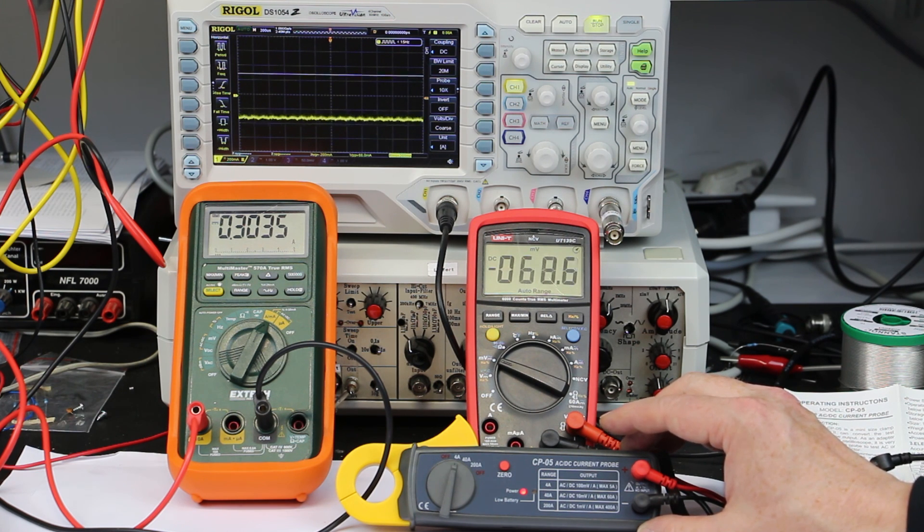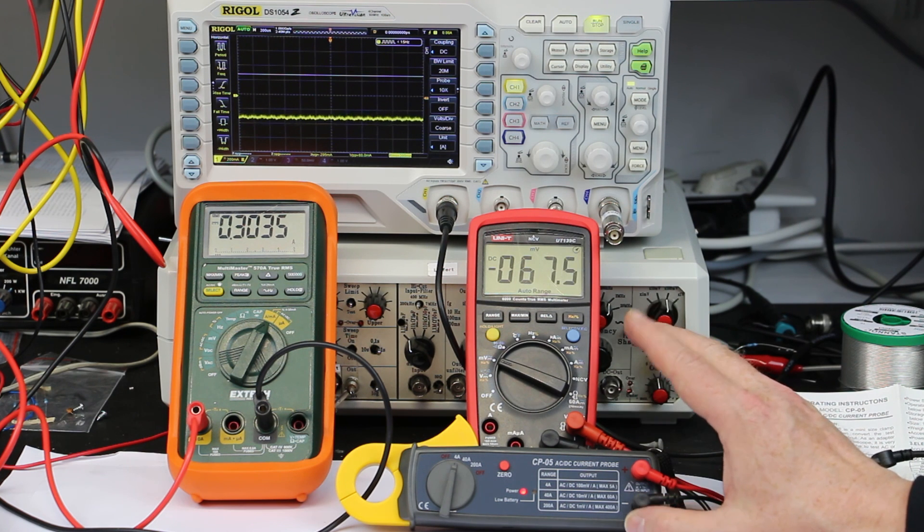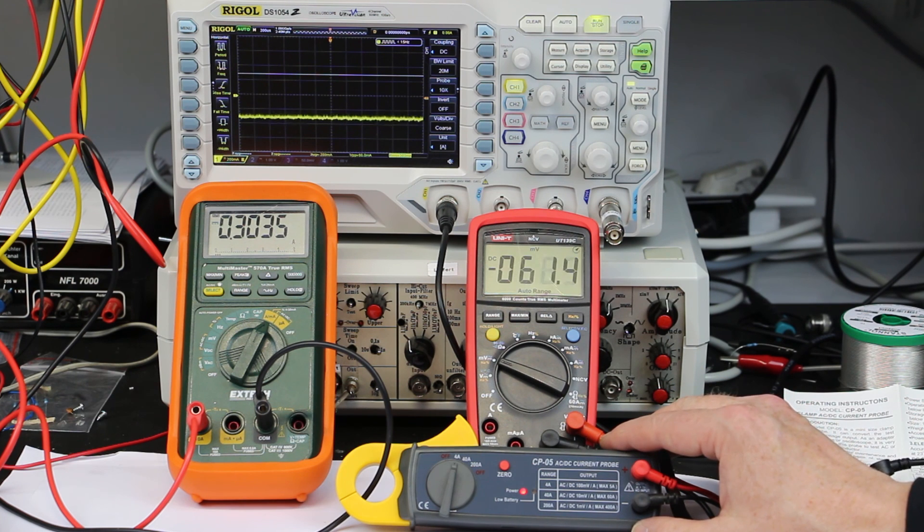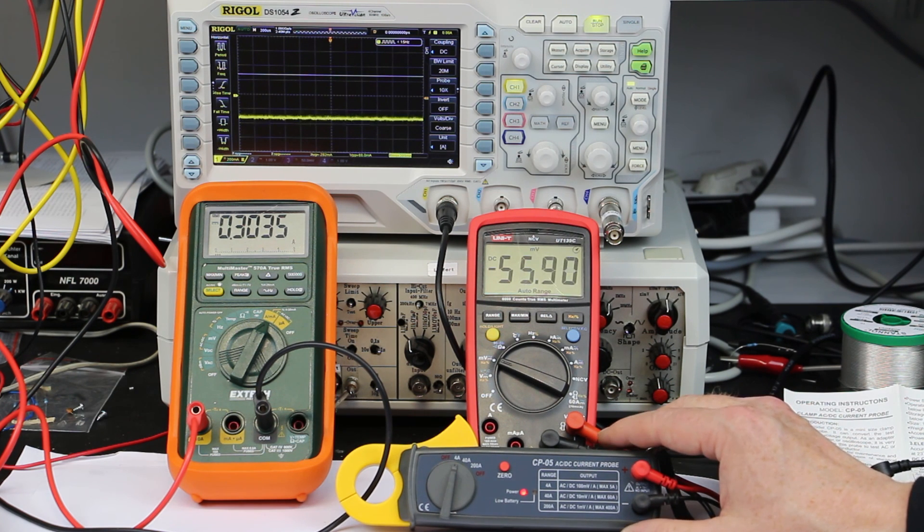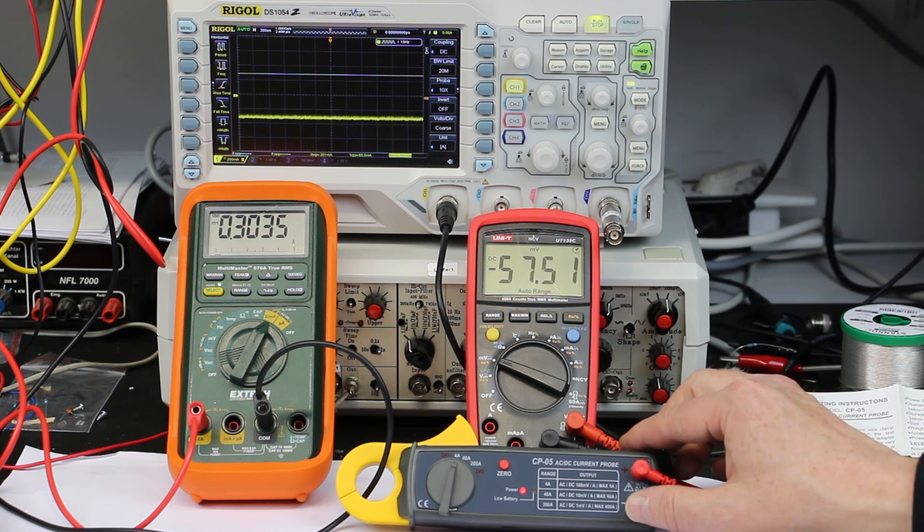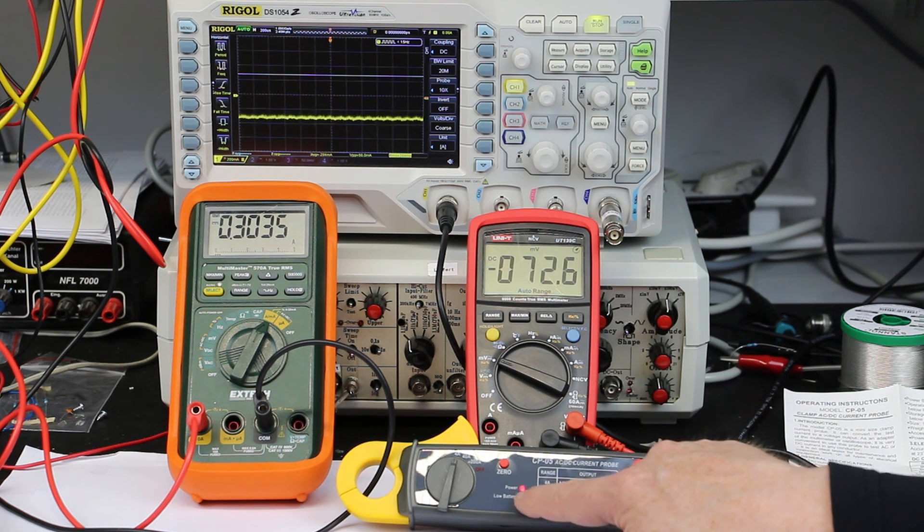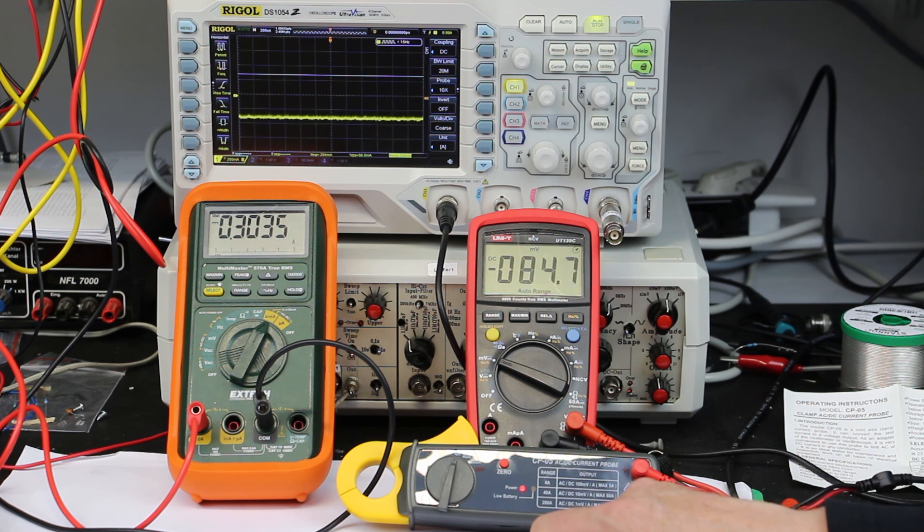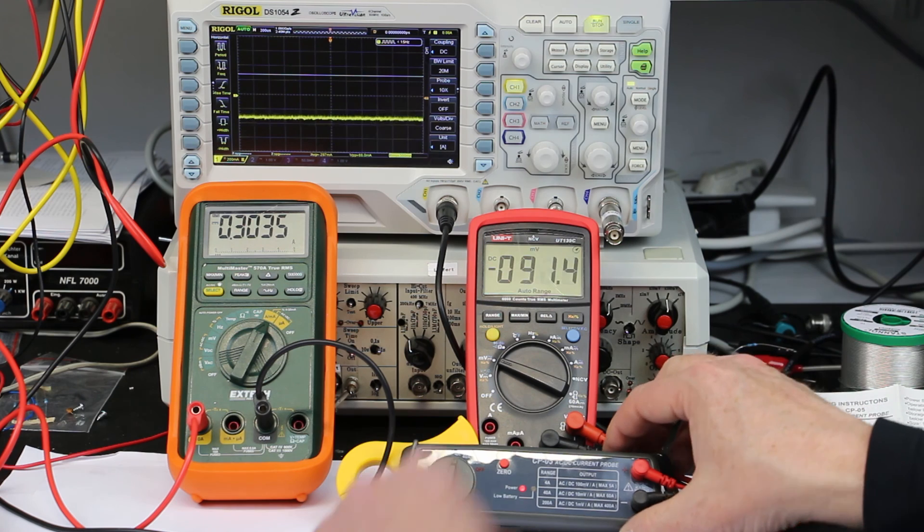So that was it for a short introduction to our AC DC current probe. The technical specs and details will be available at our shop where you also can buy one. As you can see it already, it obviously uses some batteries. It has two AA batteries inside, even a low bat indicator. And, well, that was it for today.